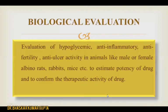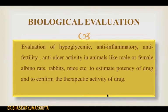The next parameter is biological evaluation. The drug can be evaluated with the help of animal models or in vitro models. The evaluation of hypoglycemic, anti-inflammatory, anti-fertility, and anti-ulcer activity is performed in animals like male or female albino rats, rabbits, mice, etc., to estimate the potency of the drug and confirm its therapeutic activity. The activity of the drug depends on its bioavailability and quality, which are determined by evaluation of the different parameters using the methods already discussed.